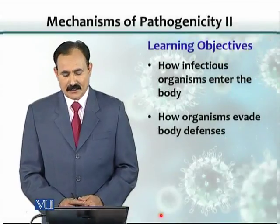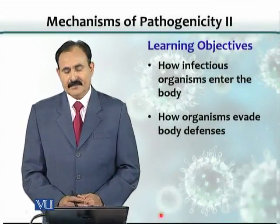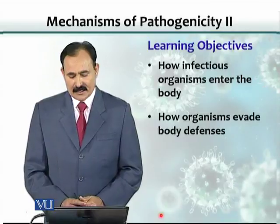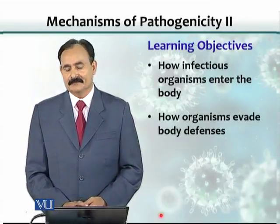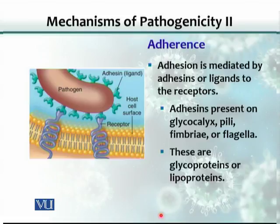Learning objectives include how infectious organisms enter the body and how organisms evade the immune system. Organisms need to attach to cells, and they do not have hands like us to grab on. But they do have something to stick on, and that is basically adhesion molecules, called adhesins.